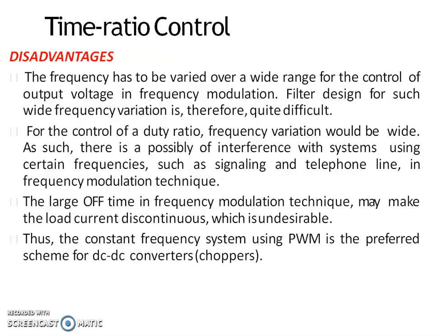The main disadvantages of Time Ratio Control are: first, the chopping frequency has to be varied over a wide range for control of output voltage in frequency modulation, making filter design quite difficult. Second, for control of duty cycle alpha, the frequency variation would be wide, creating a possibility of interference with signaling and telephone lines. Third, large off time in the frequency modulation scheme may make the load current discontinuous, which is not desirable.